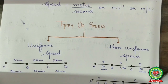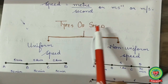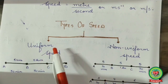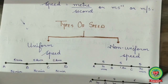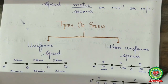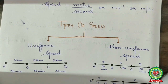Next are the types of speed. There are two types: uniform speed and non-uniform speed. Uniform, as the name suggests, means constant speed.